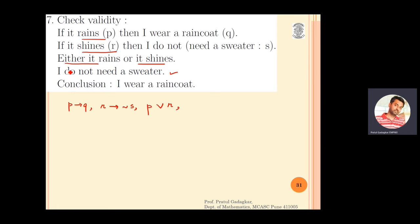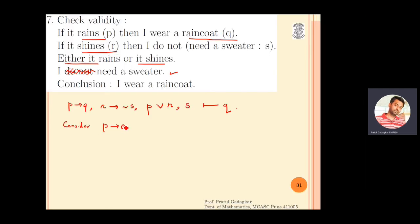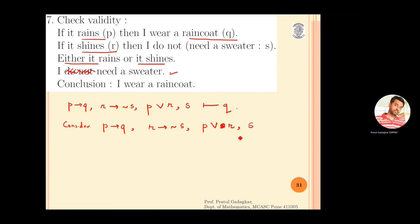Making a correction: the fourth premise is 'I need a sweater,' which is simply s. The conclusion is 'I wear a raincoat,' which is q. So the given statements are: p implies q, r implies negation s, p or r, and s.